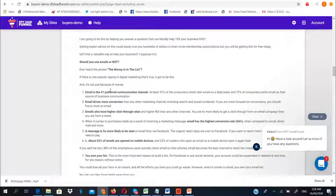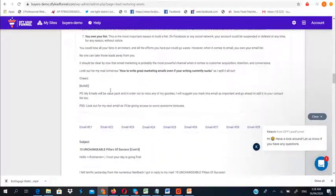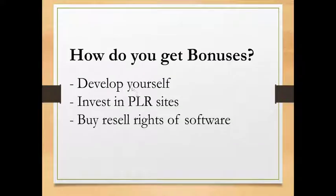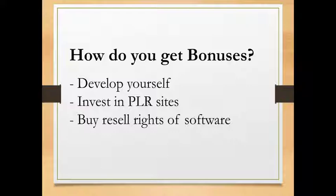The number three factor required to succeed in affiliate marketing is bonuses — the extra incentive you offer your subscribers for every promotion you do, to encourage them to buy through your link and not from other marketers promoting the same product. There are three general ways to get bonuses: one, develop the bonus yourself; two, invest in PLR websites to get products to give out as bonuses; three, invest in the resell rights of software launching on JVZoo or Warrior Plus.